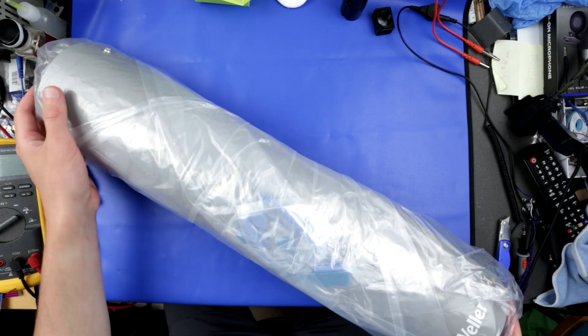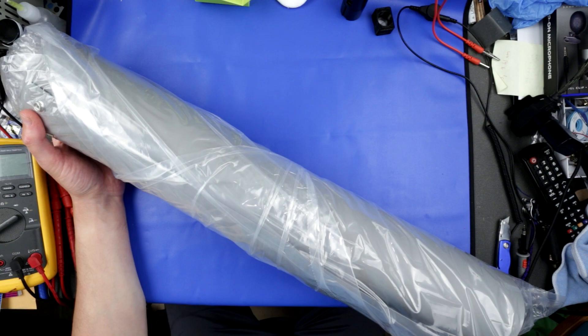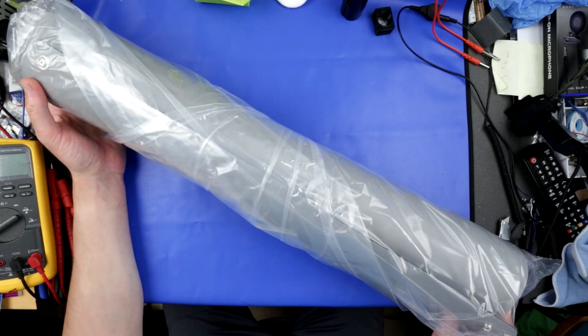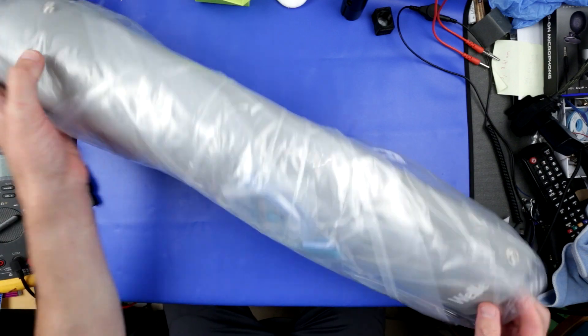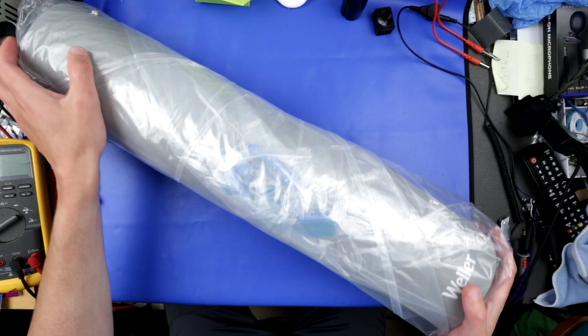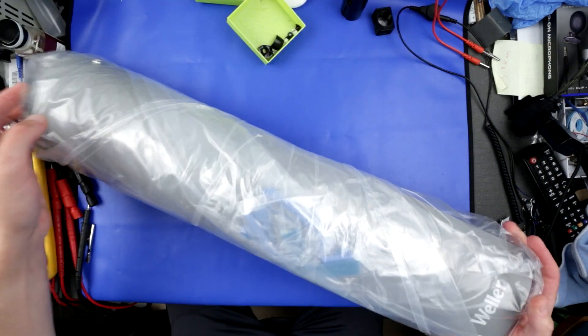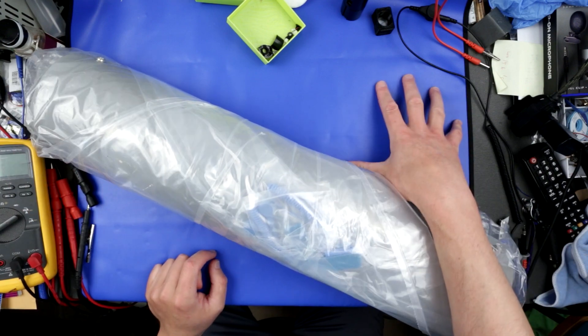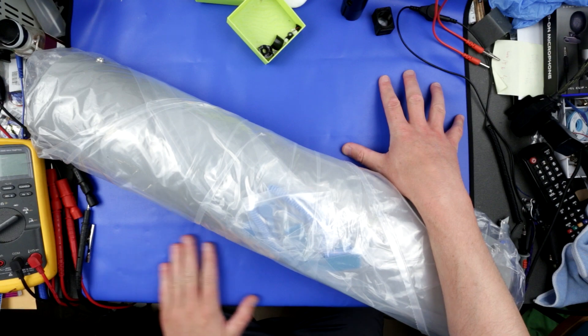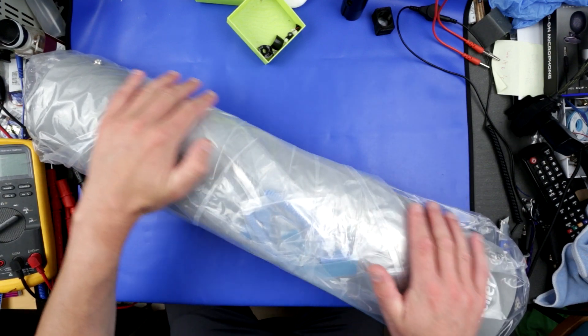This is Uncle Misha and today we have something new and big on the bench. This thing is too big to fit the bench properly and I have to put it on diagonal here. So what is this? This is Weller and this is ESD mat. It's big enough to actually completely cover my bench. I won't be using this bench anymore because this one is not as nice and even.